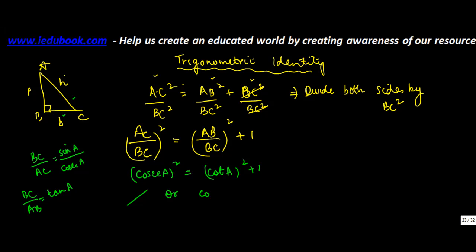Or you can say that cosec square A is equal to cot square A plus 1. And this gives you your third trigonometric identity.